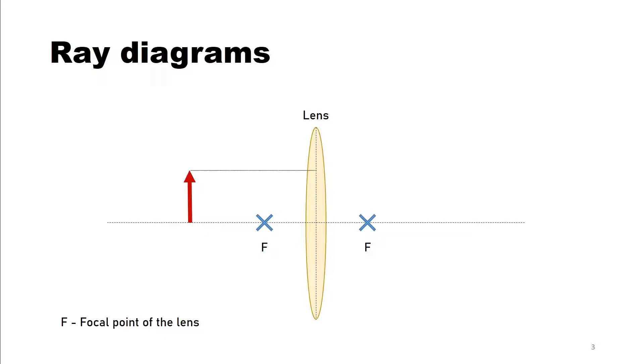Then we draw a horizontal line to the middle of the lens, or you also call that the optical axis. From there we continue the line throughout the focal point of the lens.